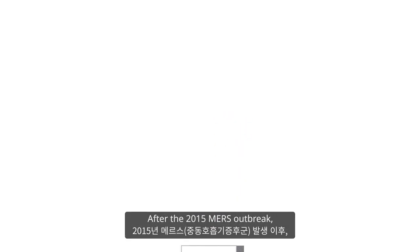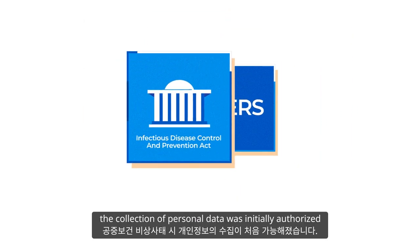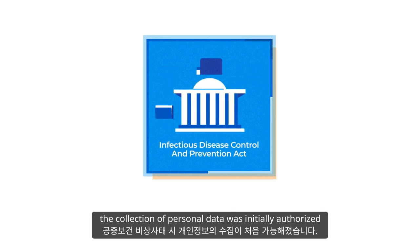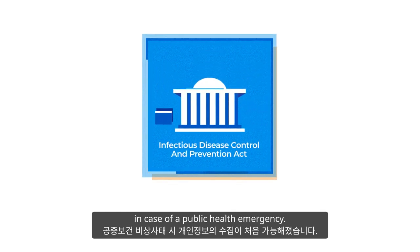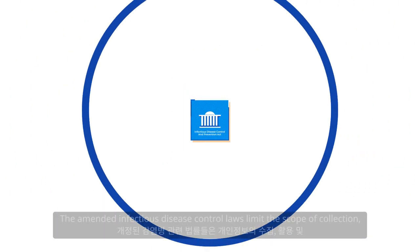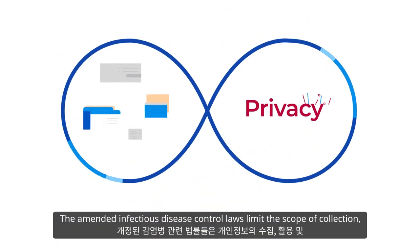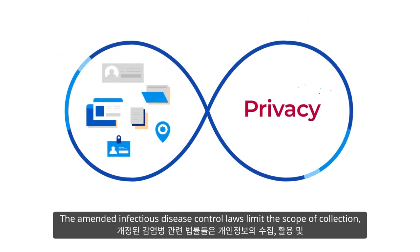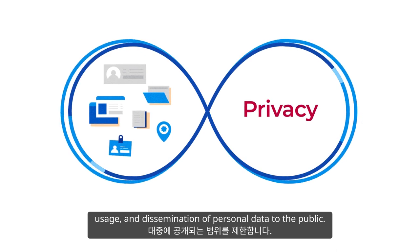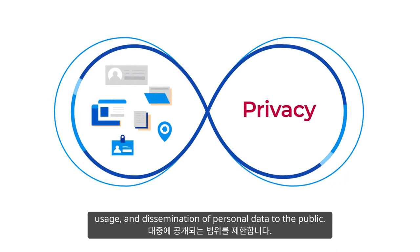After the 2015 MERS outbreak, the collection of personal data was initially authorized in case of a public health emergency. The amended infectious disease control laws limit the scope of collection, usage, and dissemination of personal data to the public.